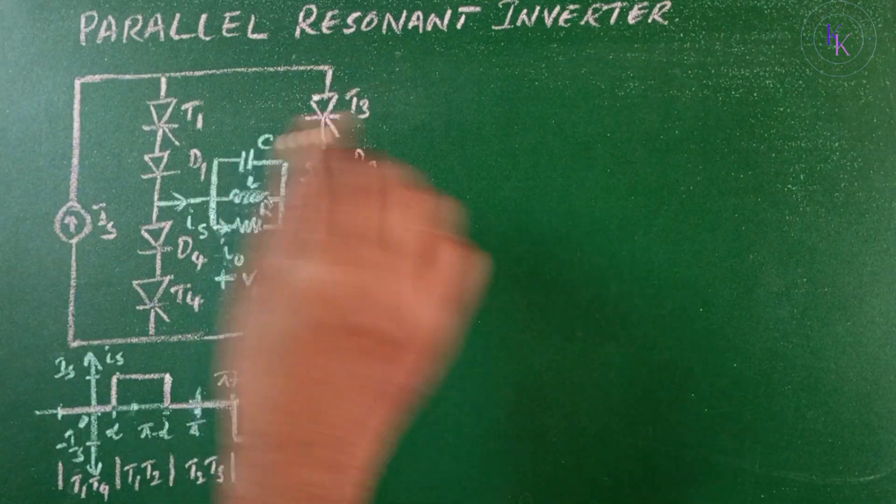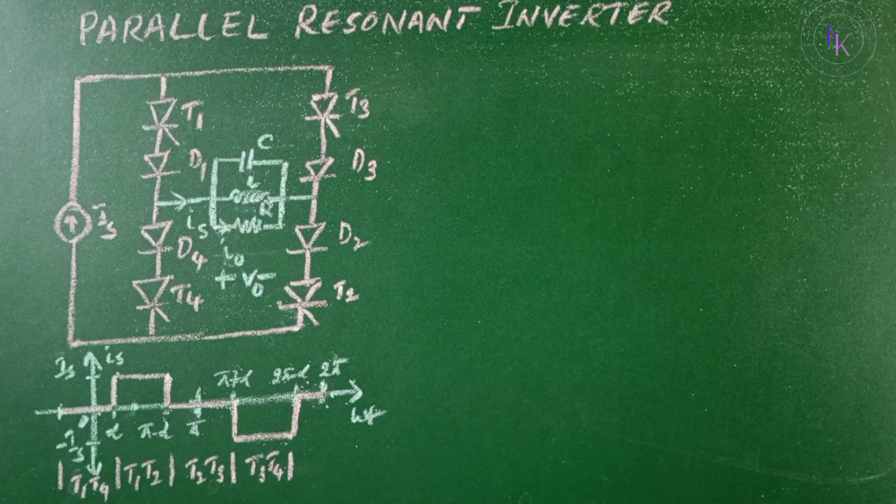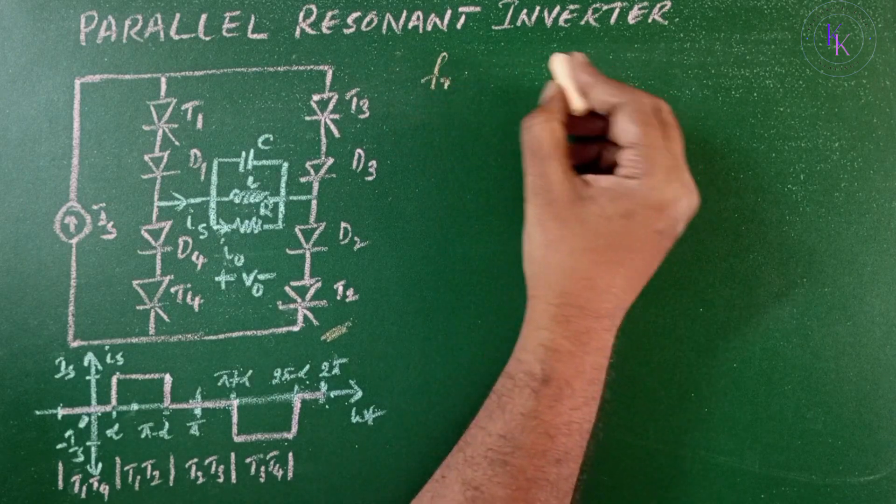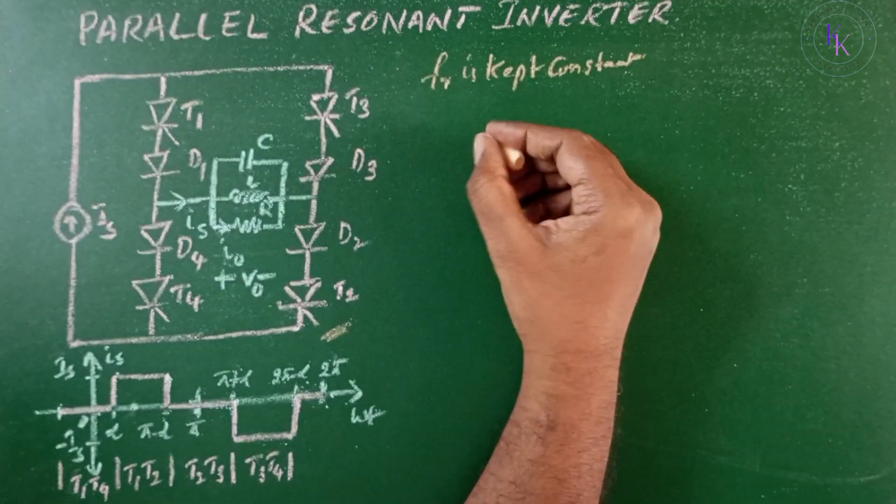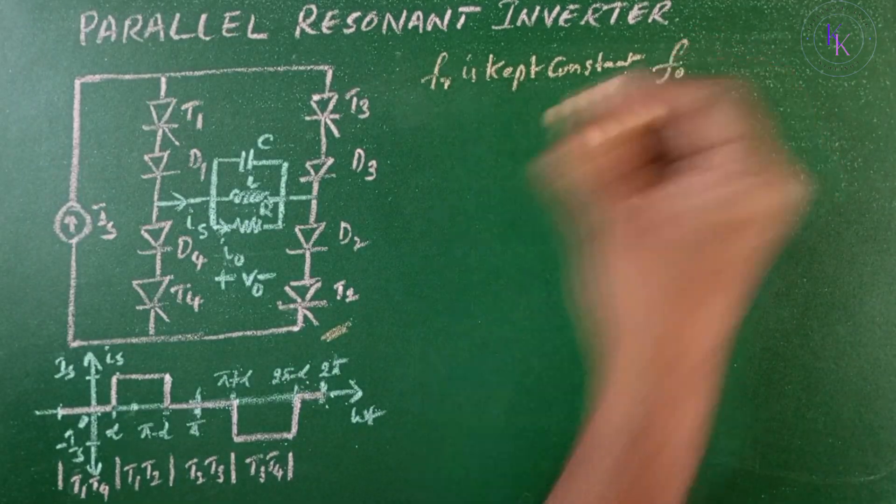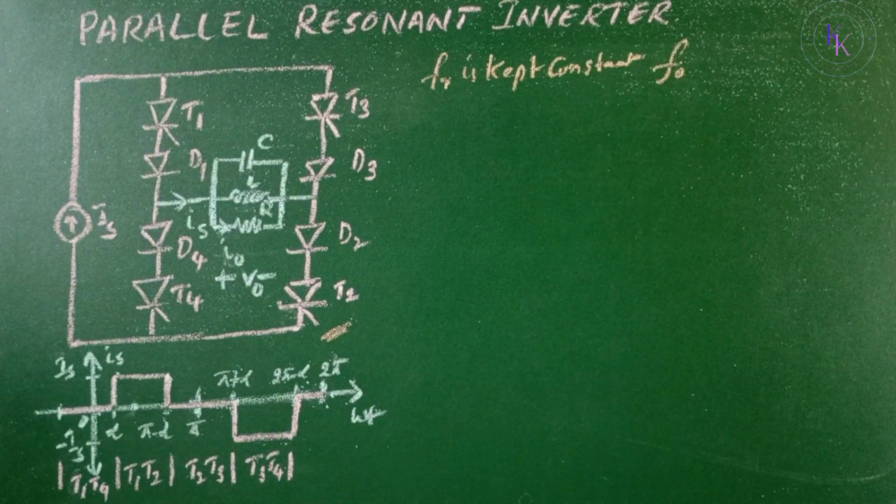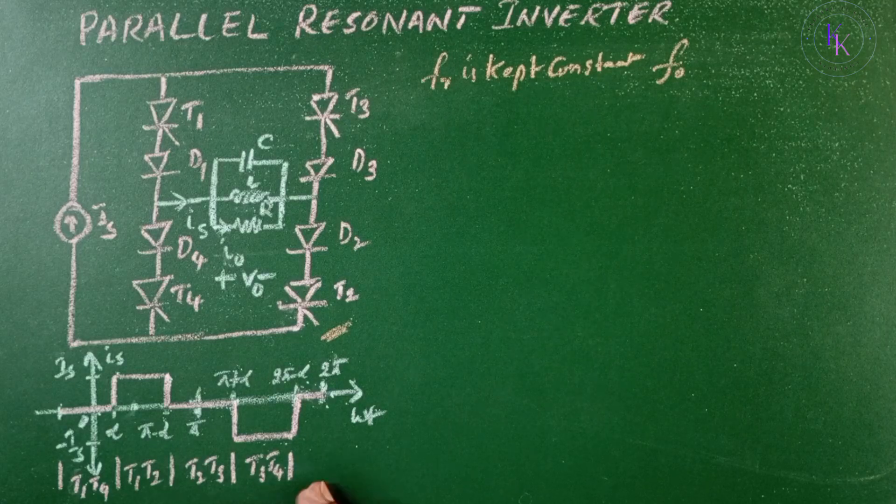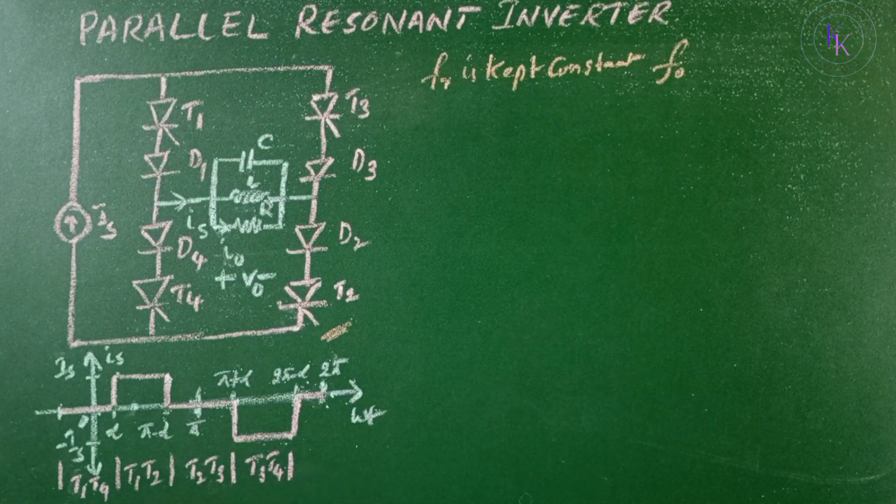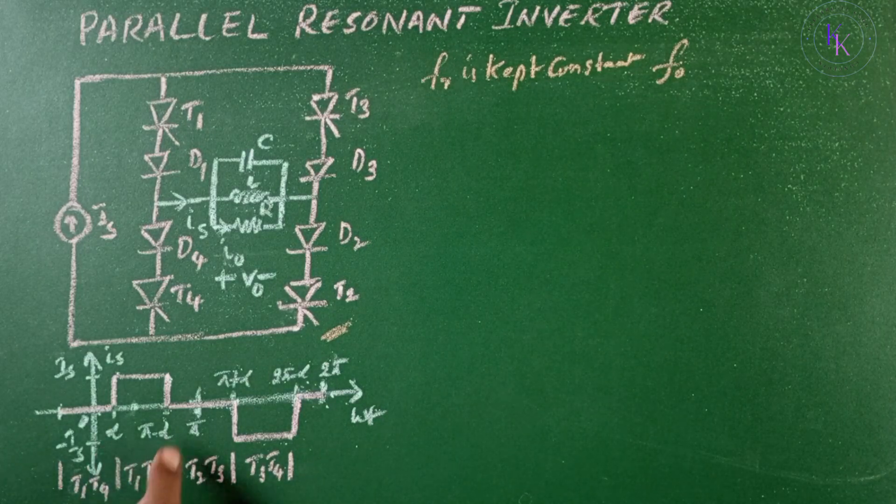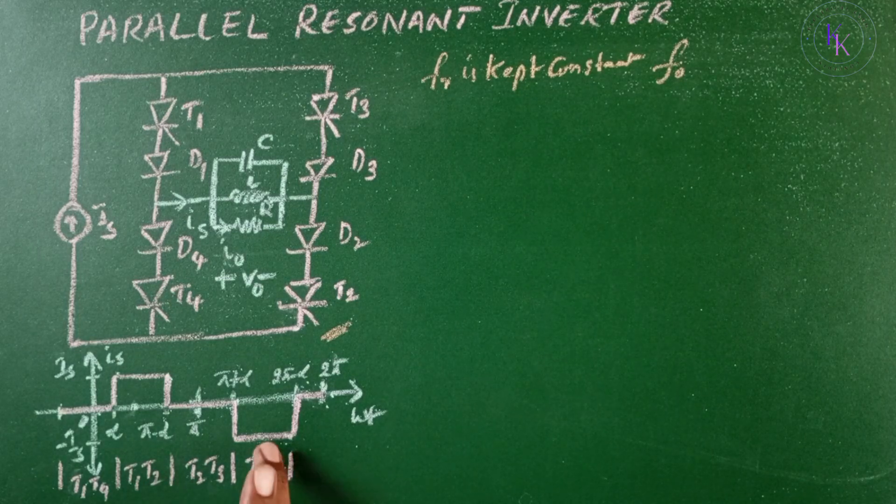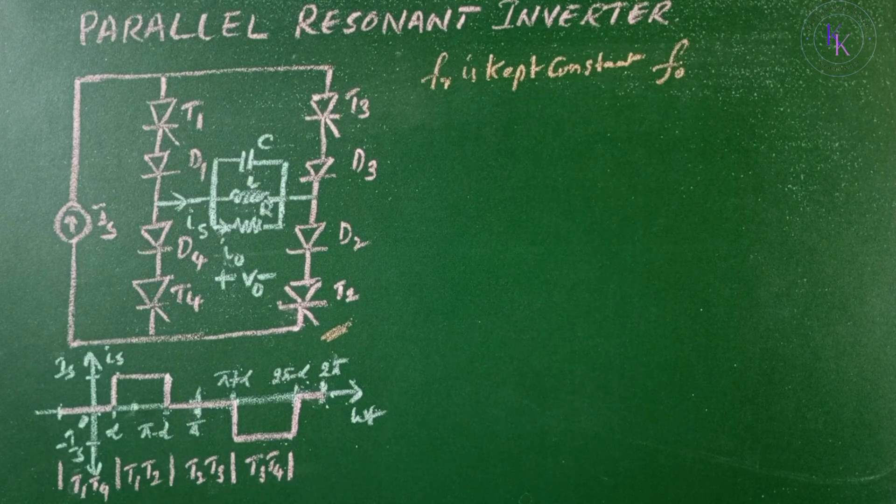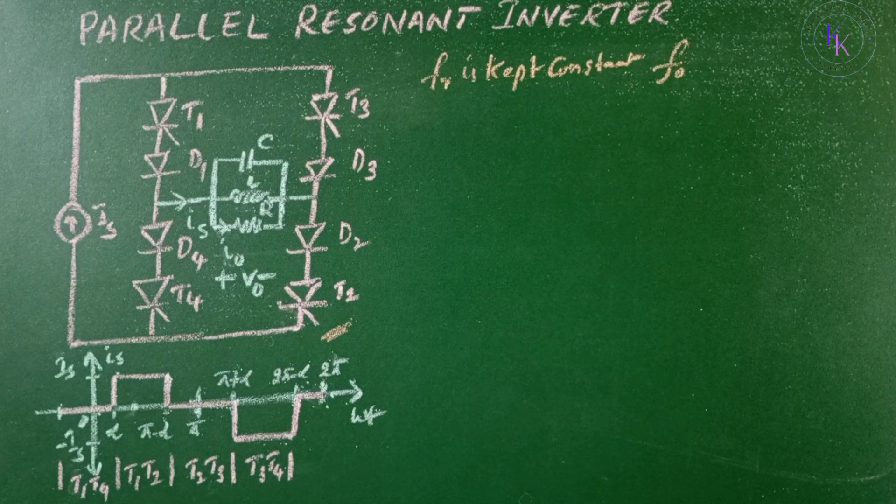The bridge topology of a parallel resonant inverter can control the output voltage. The switching frequency fR is kept constant at resonant frequency f₀ by switching two devices simultaneously. A square wave can be obtained as shown: from α to π-α, T1 T2 turn on; from π+α to 2π-α, T3 T4 turn on.